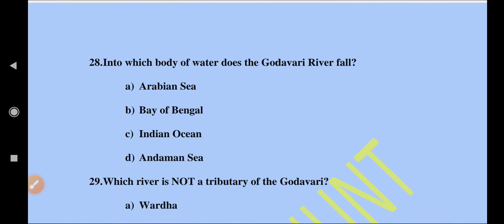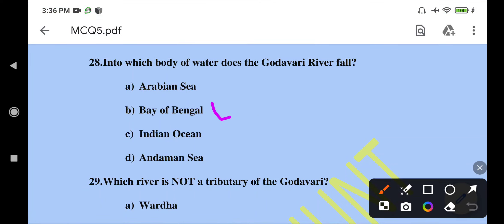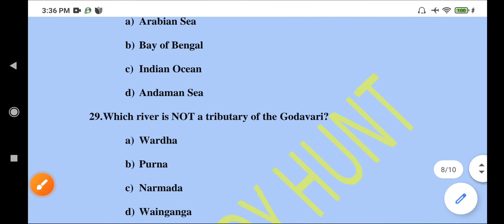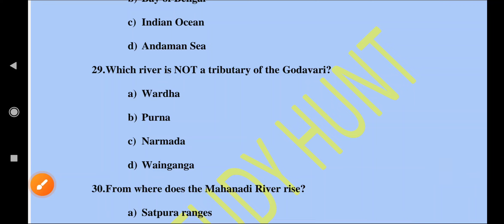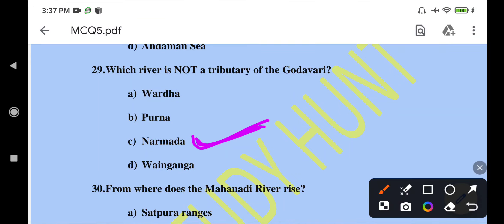Into which body of water does the Godavari River fall? It falls into the Bay of Bengal — option B. Question 29: which river is not a tributary of the Godavari? Among the options — Purna, Wardha, Narmada — the answer is Narmada, as it is not a tributary of the Godavari.